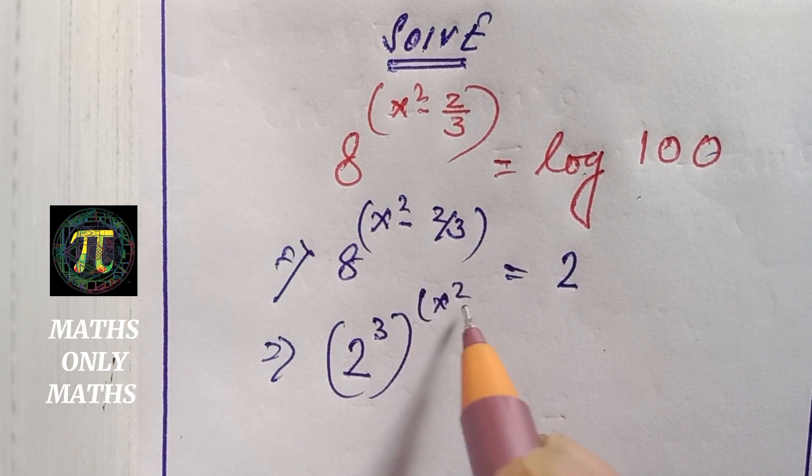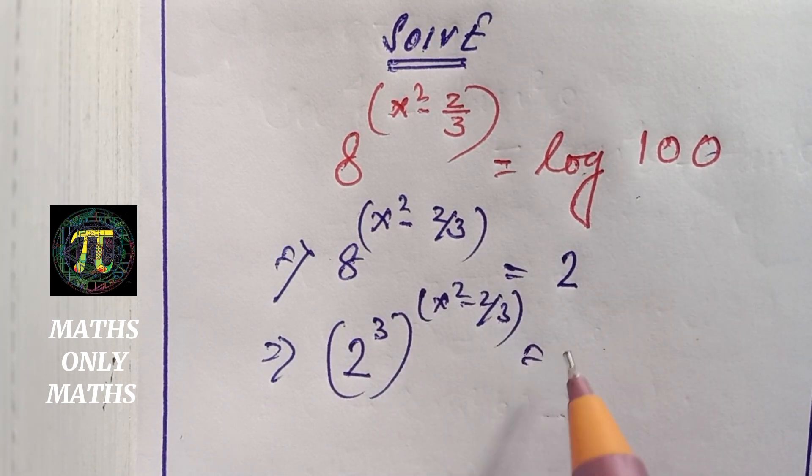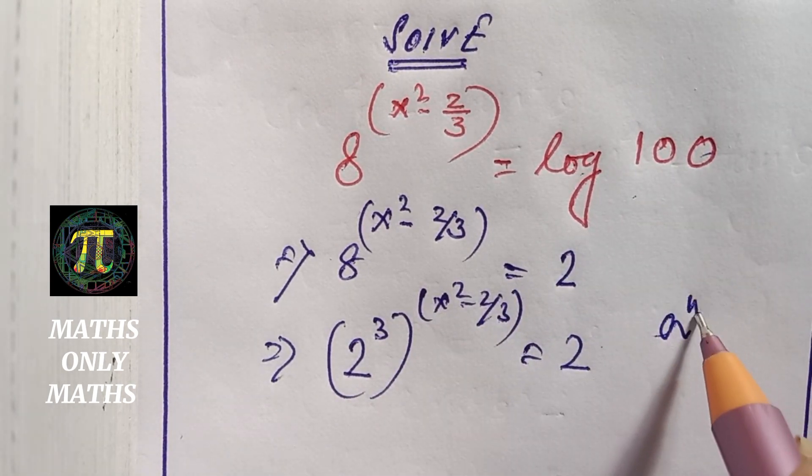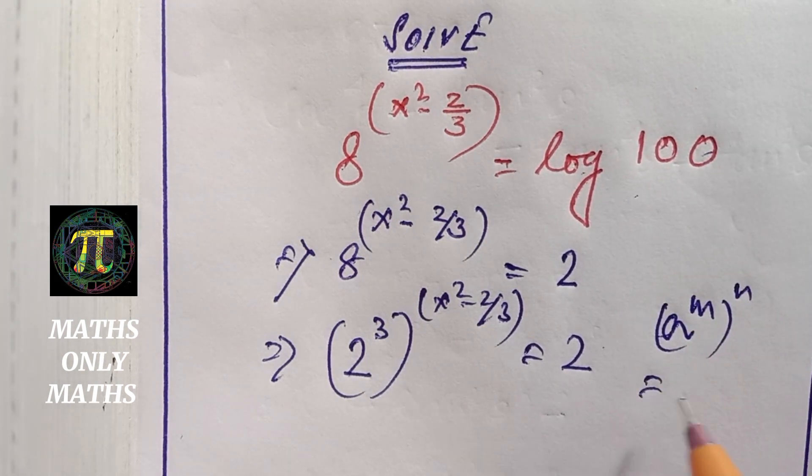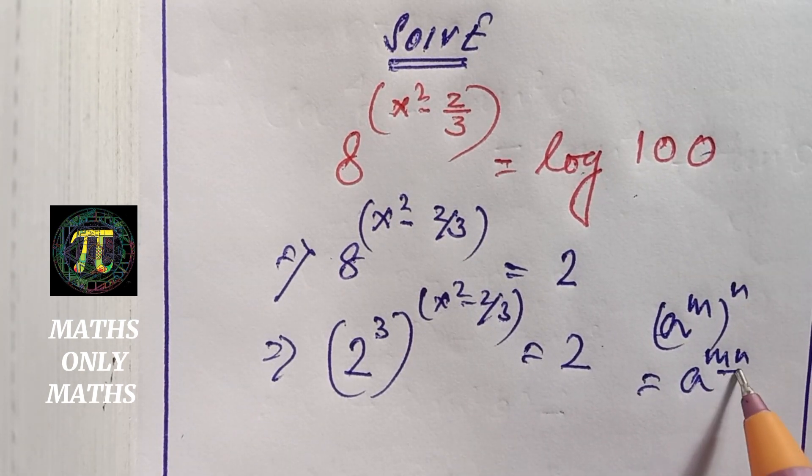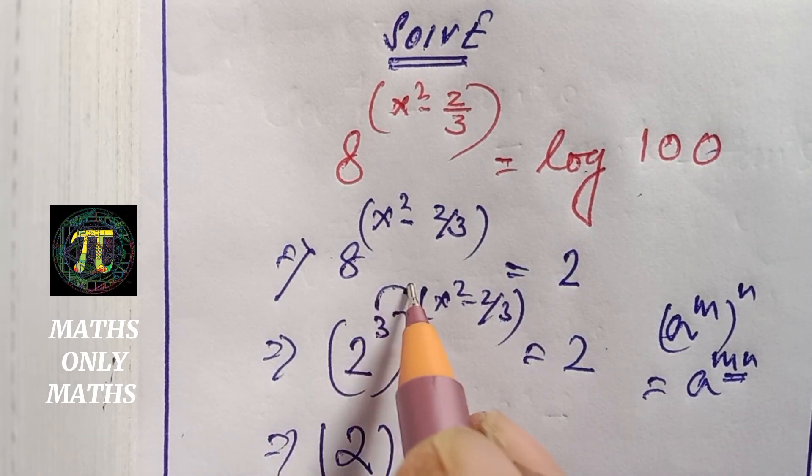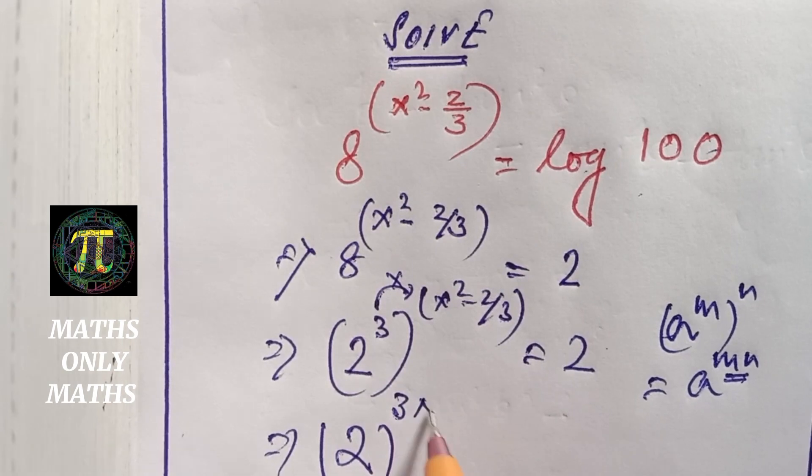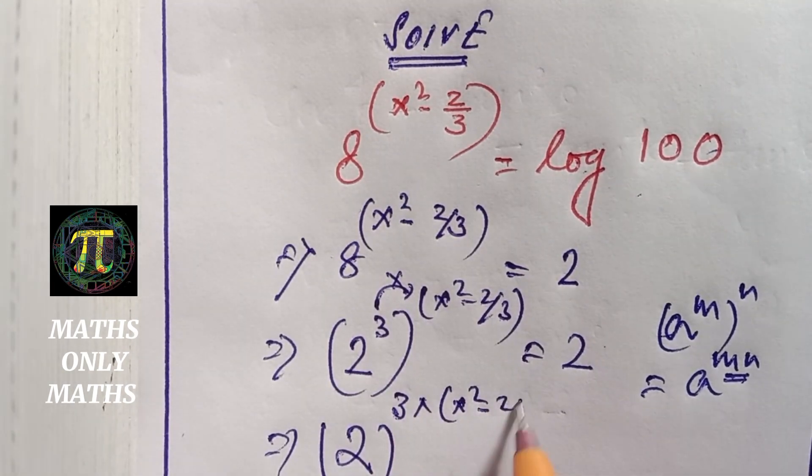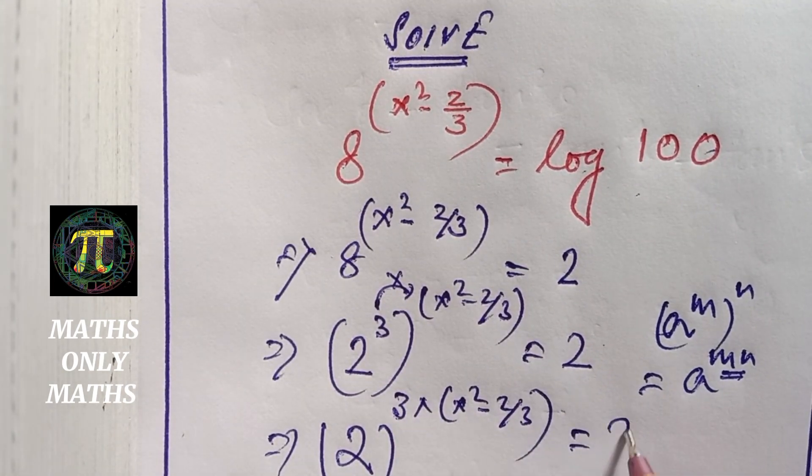2 cubed to the power x squared minus 2/3 equals 2. So, a to the power m whole to the power n is a to the power m multiplied by n. So I can write 2 to the power 3 multiplied by x squared minus 2/3 equals 2.